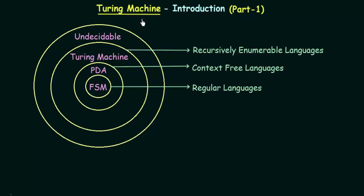If you remember in the very first lecture of this lecture series, this was the diagram we had where we discussed what were the topics that we are going to cover. We have already studied about finite state machines and push down automata. In finite state machines, the class of languages accepted by them is known as regular languages, and in push down automata, the class of languages accepted was the context free languages.